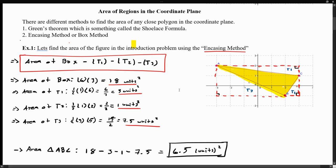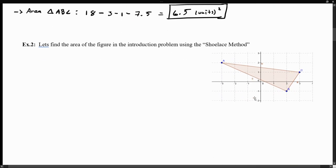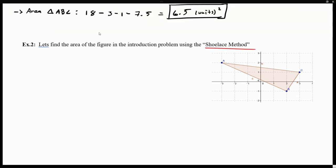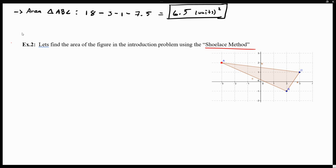Now we have another method to introduce — the shoelace method. We're still going to find the area of the same triangle, but using this different approach. Let's show that regardless of which method you use, we get the same result. The shoelace method works as follows: we identify the vertices of the figure — in this case, a triangle. We have three vertices: A at (−3, 2), B at (2, −1), and C at (3, 1).